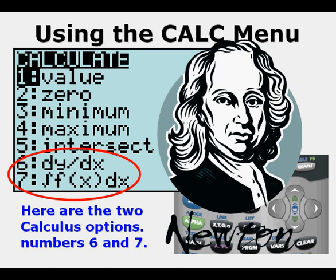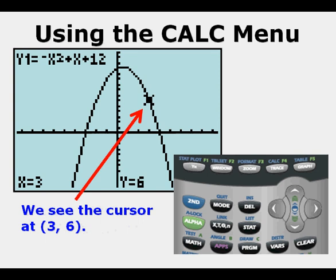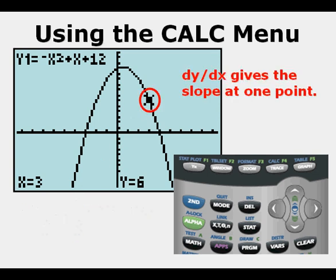Here are the two calculus options, numbers six and seven, just to the left of the Isaac Newton, one of the inventors of calculus. Scroll down to option six, dy dx. We see the cursor at the point three comma six. The dy dx option gives the slope or derivative at a point on the graph of the function.